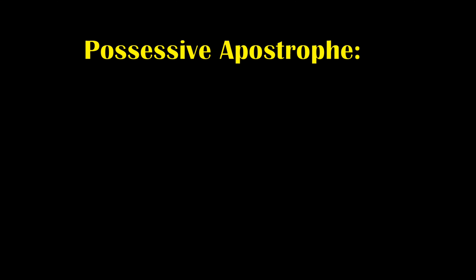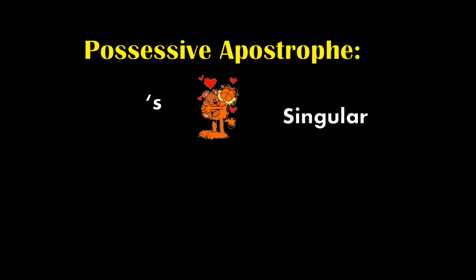Now let's try to differentiate these two types of possessive apostrophe. When are we going to use apostrophe S? We're going to use apostrophe S when it is in a singular situation.